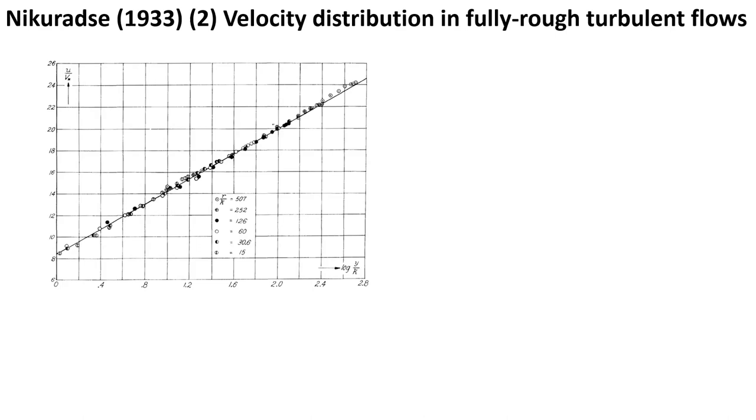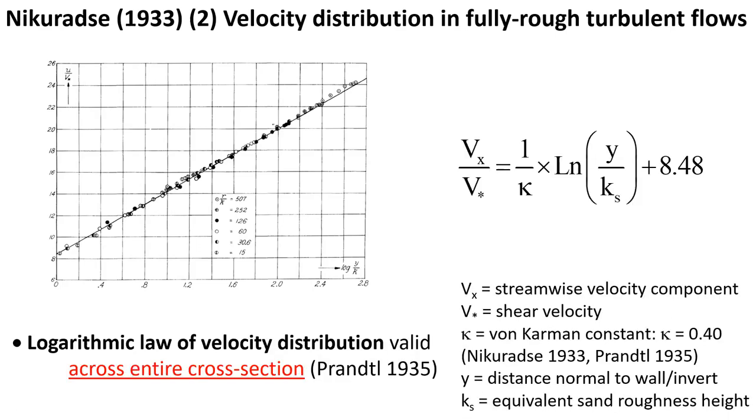The original graph of Nikuradse shown here was presented together with a correlation showing a logarithmic law of the velocity distribution across the entire pipe cross section.